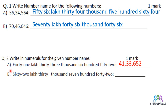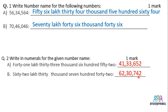Moving to the next one: 62 lakh 30,742. Again, 62 lakh — after 5 zeros, we will come to the lakh. So this is lakh: 62 lakh. After that it is 30,000, so here 30,000.